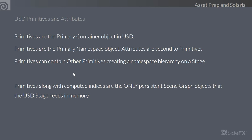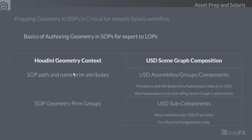The basics of authoring geometry in SOPs: we have the Houdini geometry context where we work with SOP path and name prim attributes, and SOP geometry prim groups. Inside USD, the SOP path and name prim attributes can drive USD assemblies, groups, and components — a primitive scene graph hierarchy based on a simple path attribute. This path becomes very important if we want to limit composition needed inside the stage.